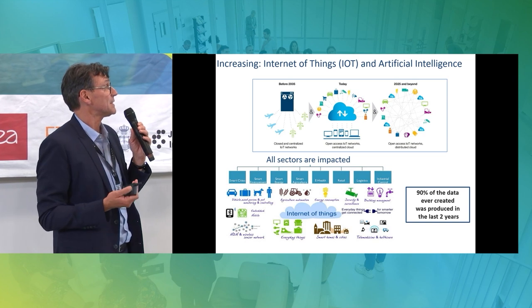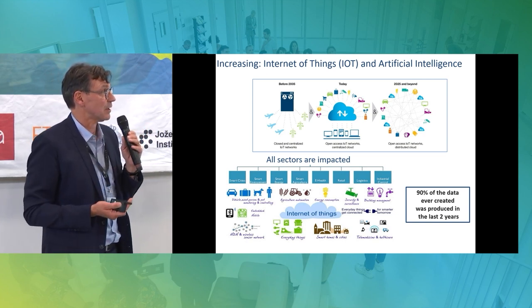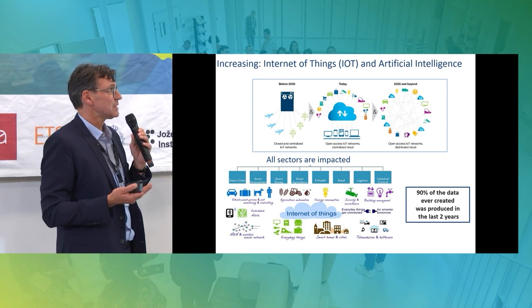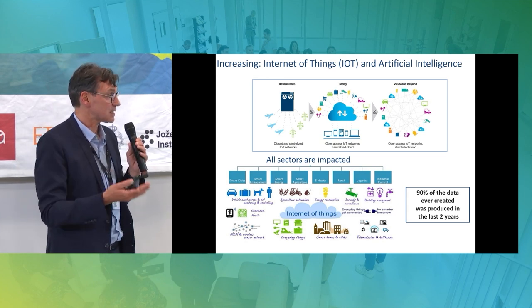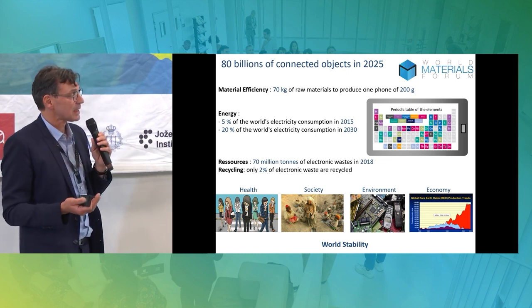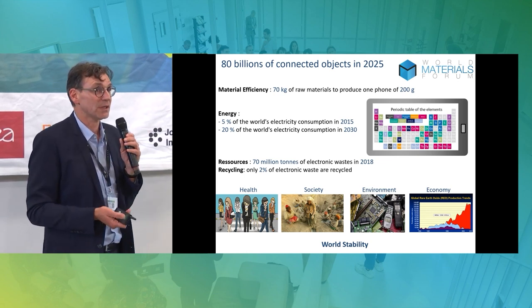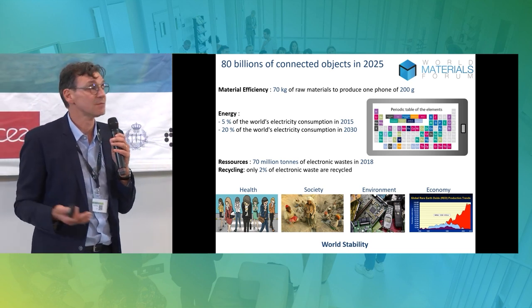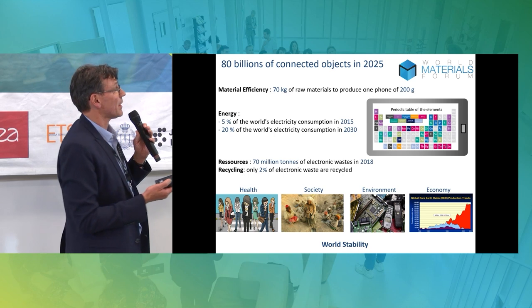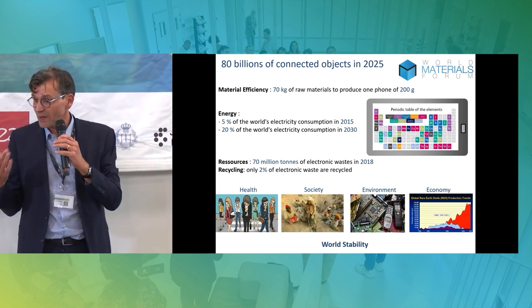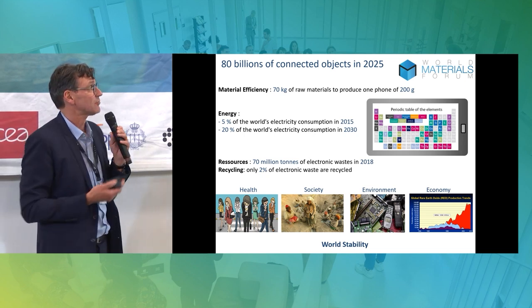It impacts all sectors of society — we're talking about smart cities, smart environment, even smart agriculture. And this exponential increase is such that 90% of the data that have ever been created were produced just in the last two years. This has a huge impact on energy and also on material efficiency. If you take just a simple phone — 200 grams — you need 7 kilos of raw materials. There are about 70 million tons of electric waste produced, and in electronics only 2% to 5% is recycled.